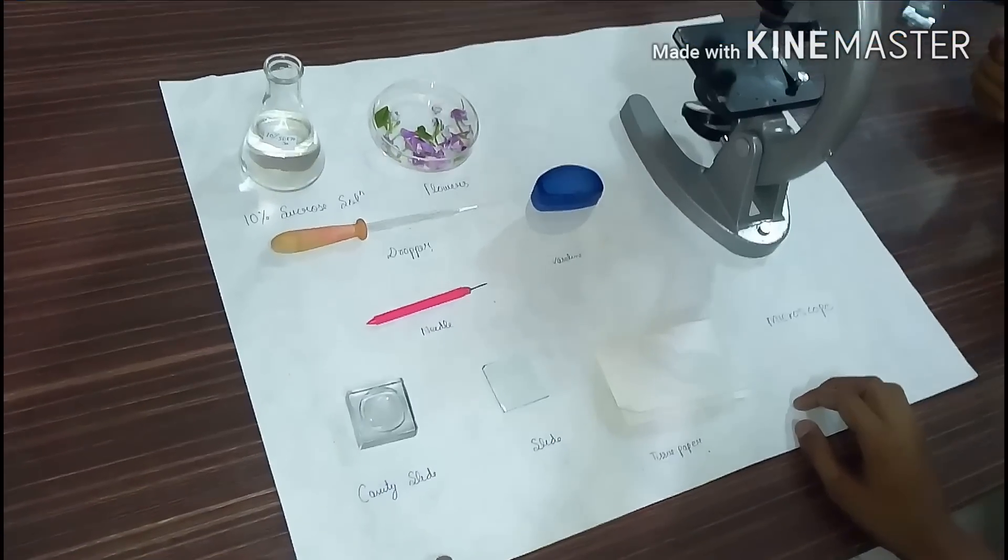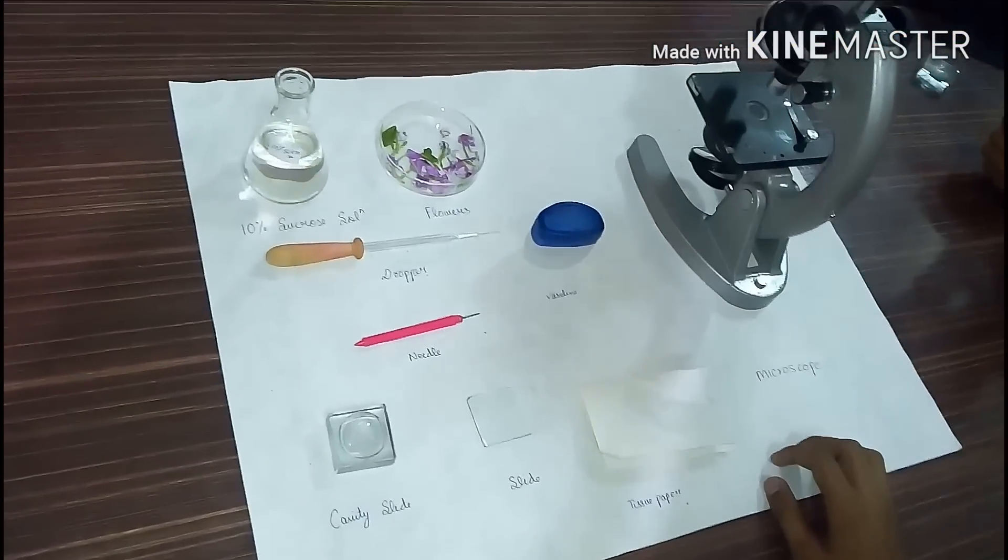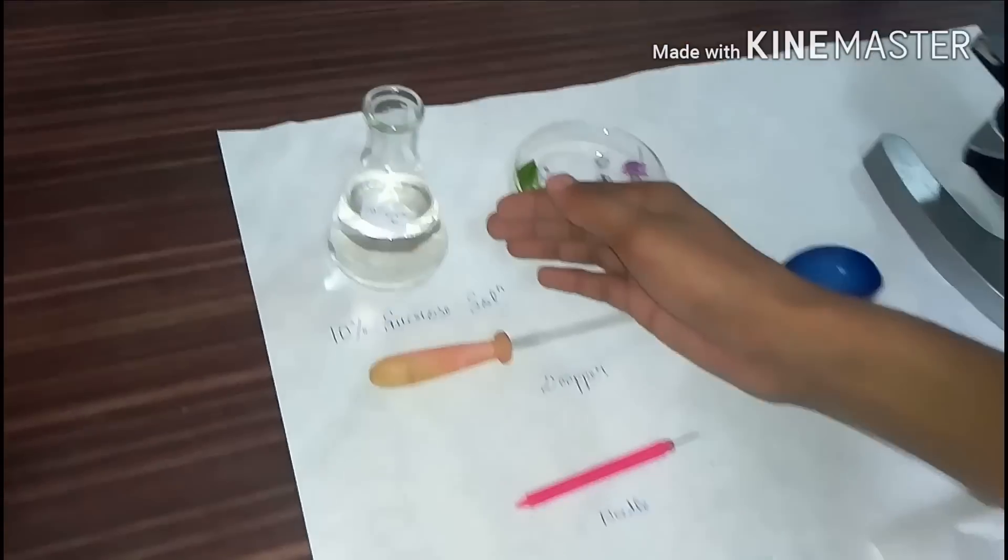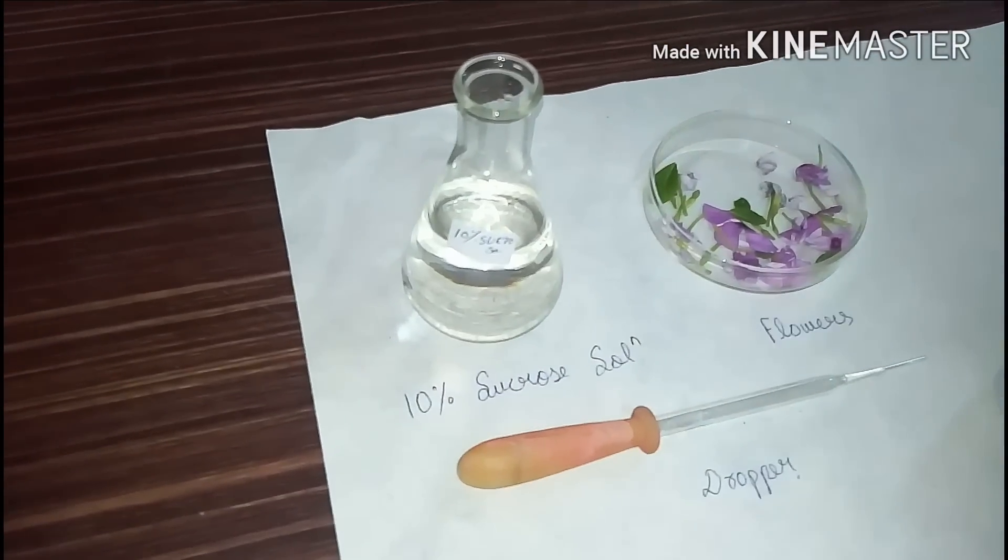Hello, and today we are going to perform germination of pollen grains by hanging drop culture. The apparatus we require is 10% sucrose solution for a nutrient medium.